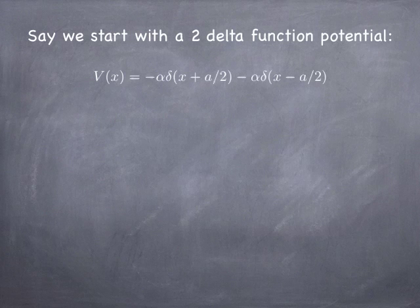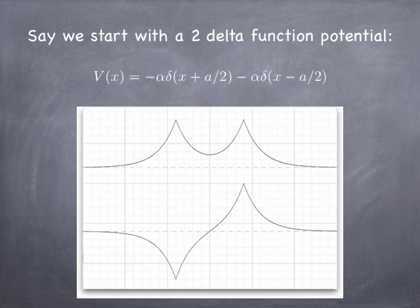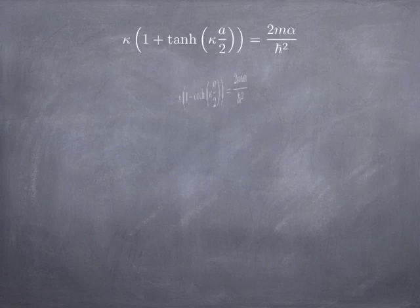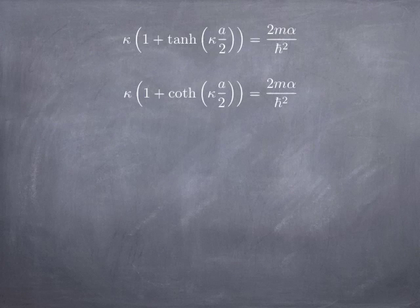So you've got a double delta function potential. You guys remember what the solutions looked like. One was a hyperbolic cosine internally and hyperbolic sine. That's the symmetric and anti-symmetric version. And on the right and the left, of course, are the decreasing and increasing exponentials. And you no doubt remember the transcendental equation for each of those. The symmetric case had the hyperbolic tangent and the anti-symmetric case had the hyperbolic cotangent.